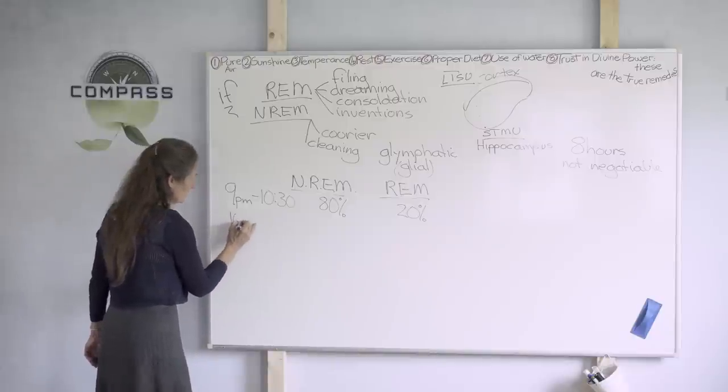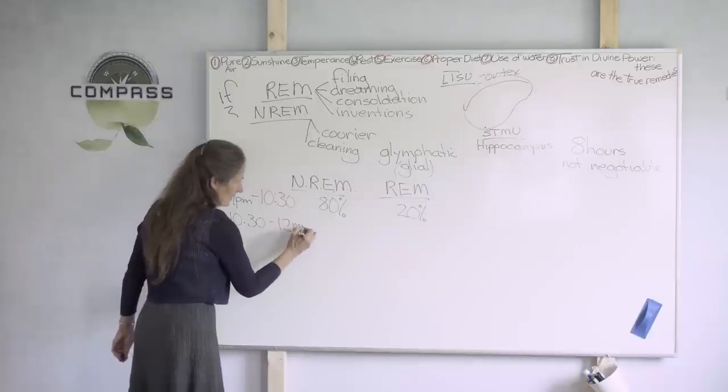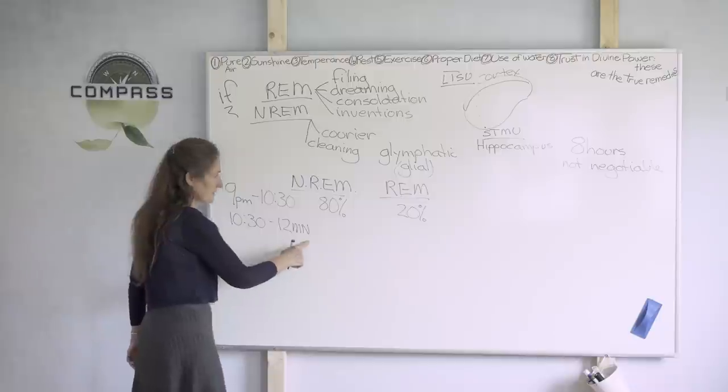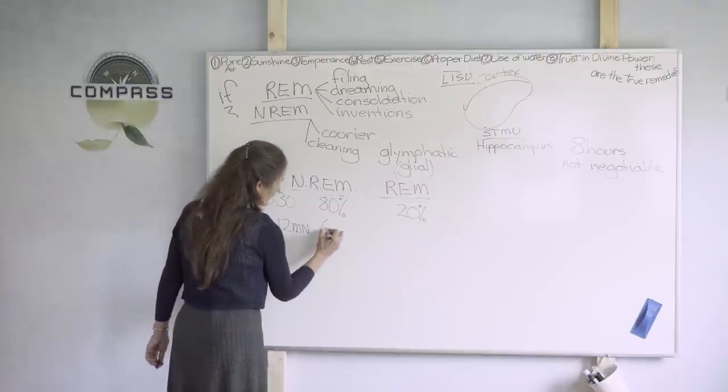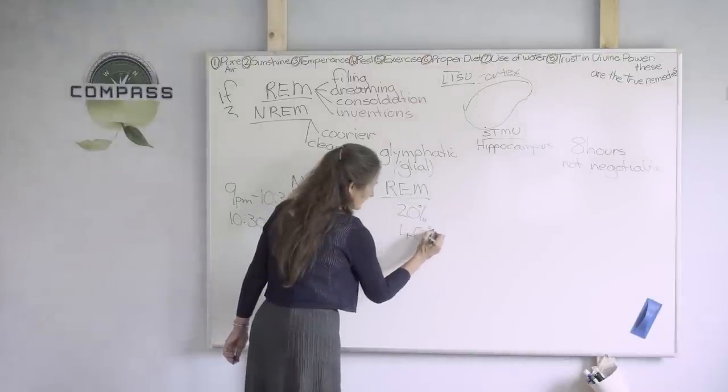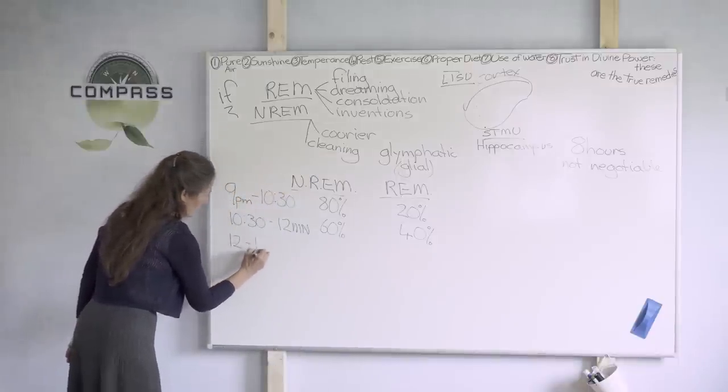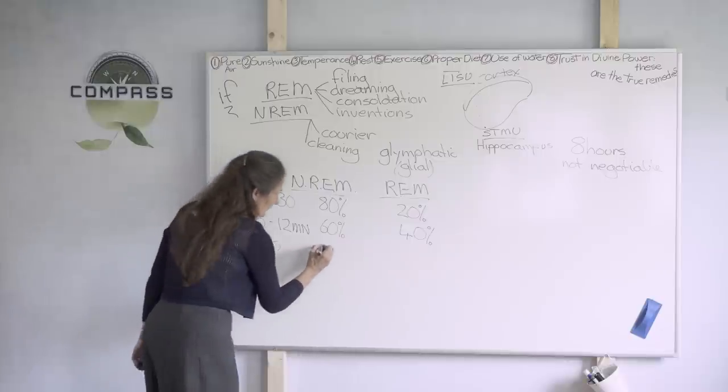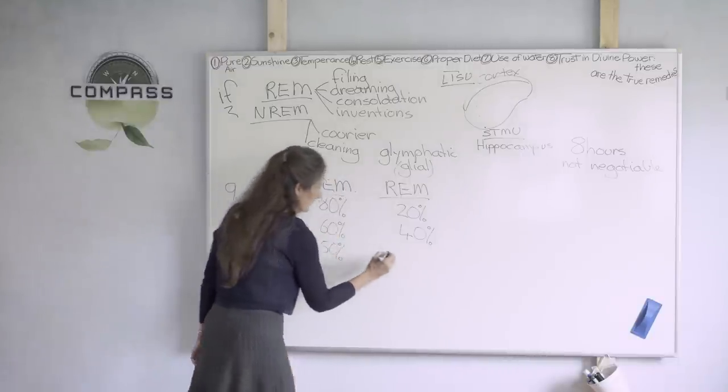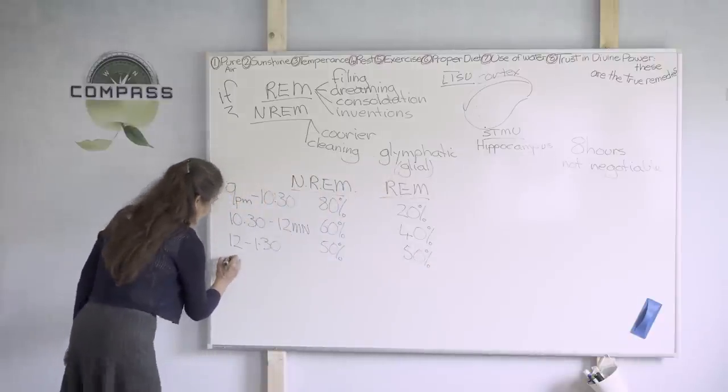As we move through the night, now we're coming from 10:30 to 12 midnight. From 10:30 to 12 midnight, the second set of 90 minute cycle, we have 60% non-rapid eye movement, and 40% rapid eye movement. And then we come from midnight to 1:30. From midnight to 1:30, we've got about 50-50. 50 non-rapid eye movement time, 50 rapid eye movement time.